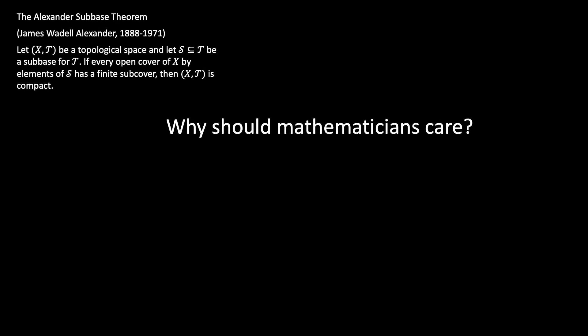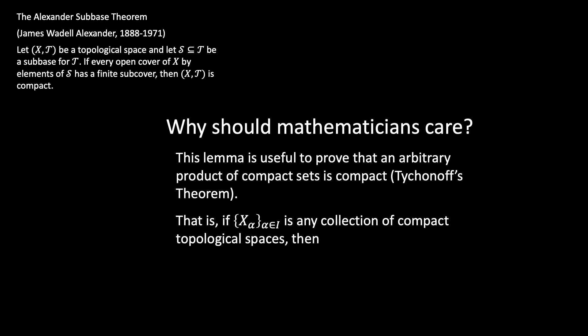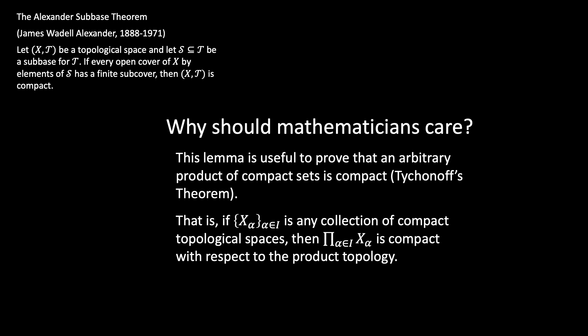So why should mathematicians care about the Alexander Subbase Theorem? This lemma is useful to prove that an arbitrary product of compact sets is again compact — that's known as Tychonoff's Theorem. That involves the axiom of choice; in fact, Tychonoff's Theorem is equivalent to the axiom of choice. In symbols, if you've got any collection X sub alpha of compact topological spaces, then their Cartesian product is again compact with respect to the product topology.